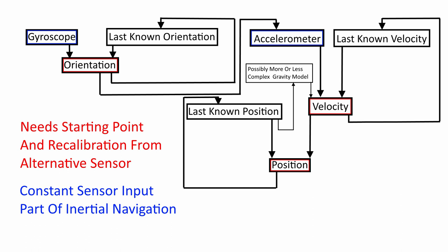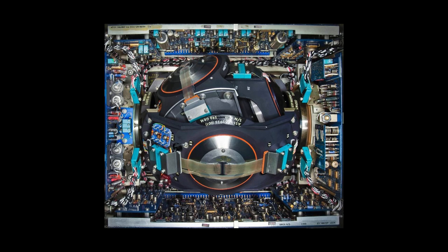Orientation is fairly easy to calibrate. You can use a compass and a sun tracker or a horizon tracker. When you're in an aircraft, in a spacecraft, you can just use a star tracking camera. And for the rest of your position and velocity, you can use any other means of navigation that I've already discussed earlier.